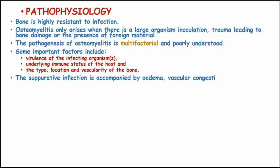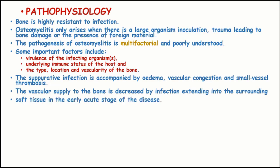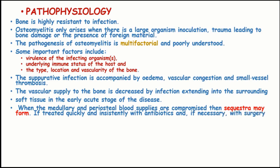The suppurative infection is accompanied by edema, vascular congestion, and small vessel thrombosis. The vascular supply of the bone is decreased by infection extending to the surrounding tissues in the early acute stage of the disease. When the medullary and periosteal blood supplies are compromised, sequestrum may form. If treated quickly and consistently with antibiotics, and if necessary with surgery, acute osteomyelitis can be halted prior to development of dead bone.